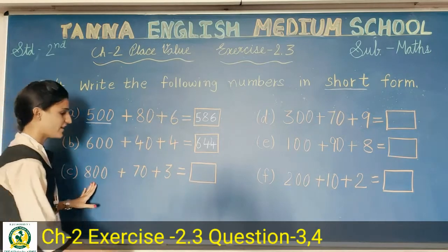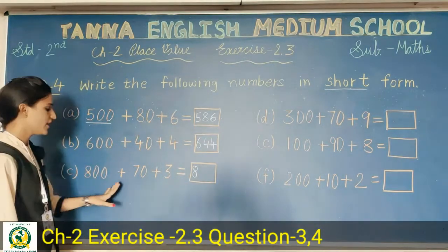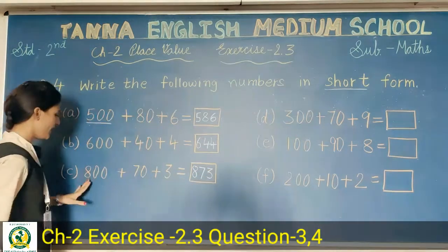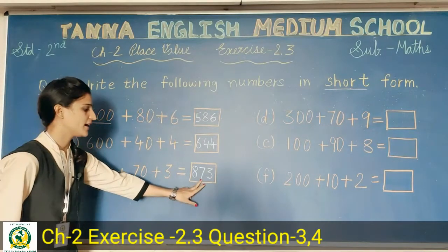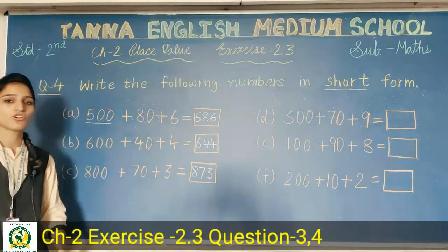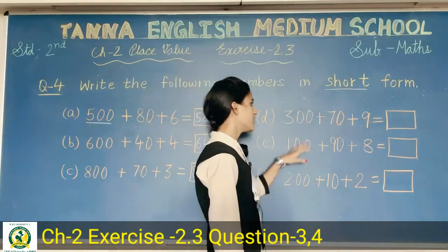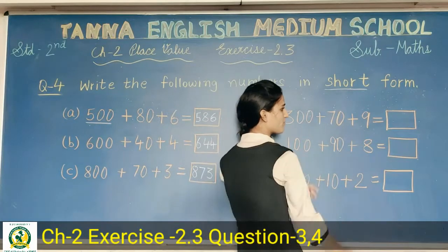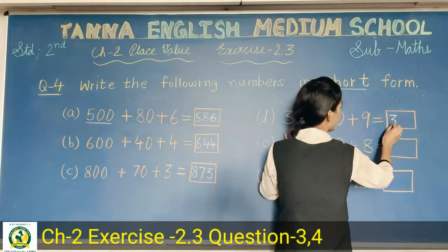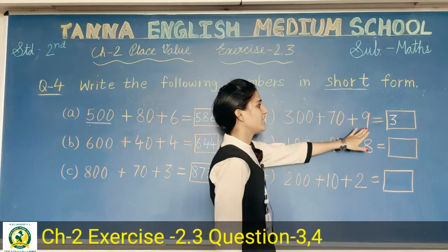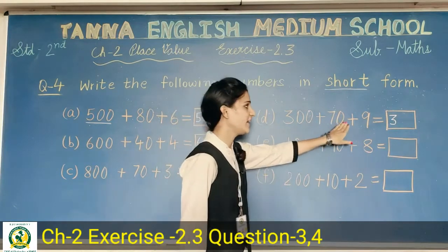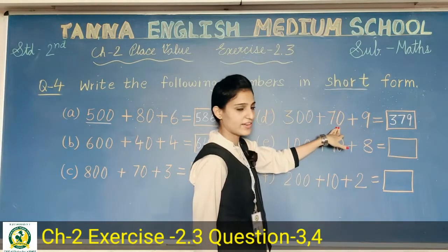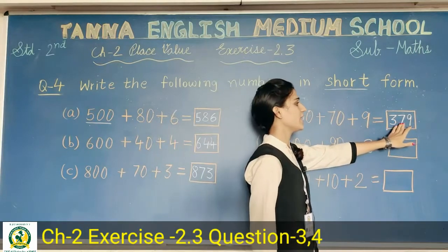Next: eight hundred and seventy-three. Here we have eight hundred — write eight. Then seven tens — seventy. Then three ones. Eight hundred and seventy-three. Then: three hundred and seventy-nine — three hundred, seven tens and nine ones — three hundred and seventy-nine.